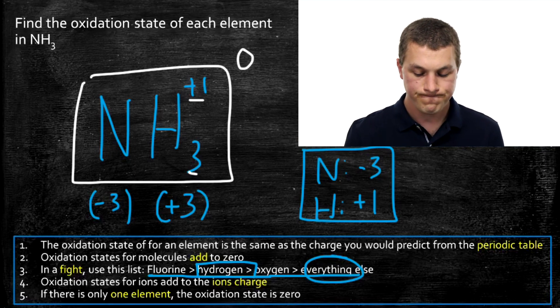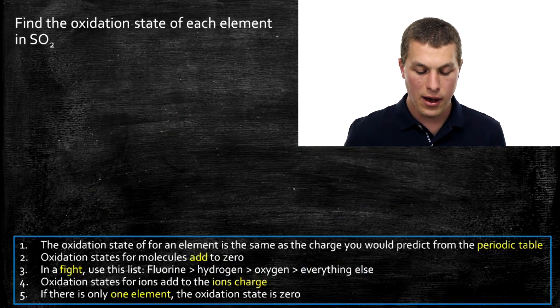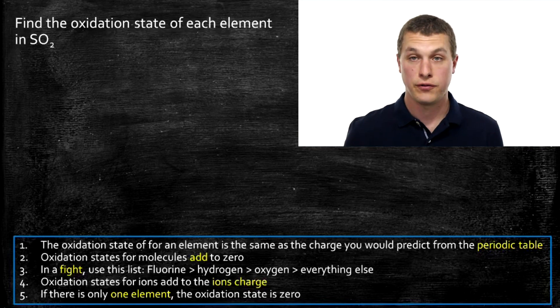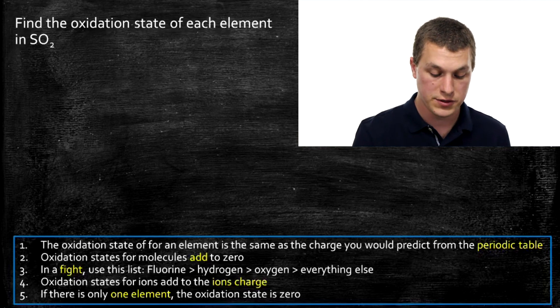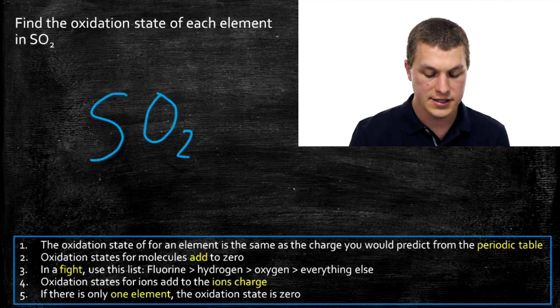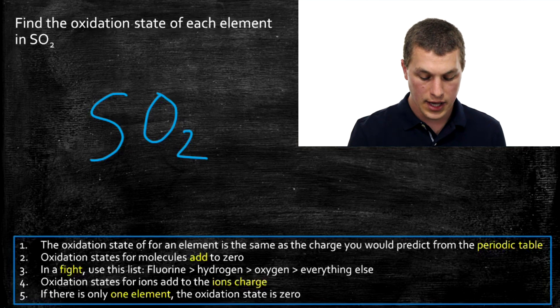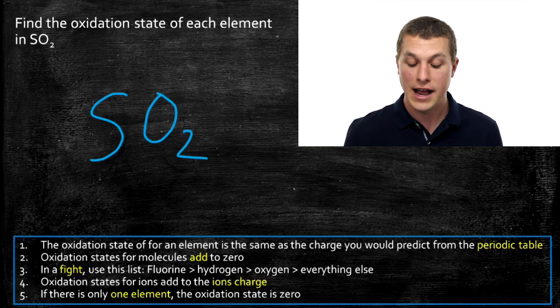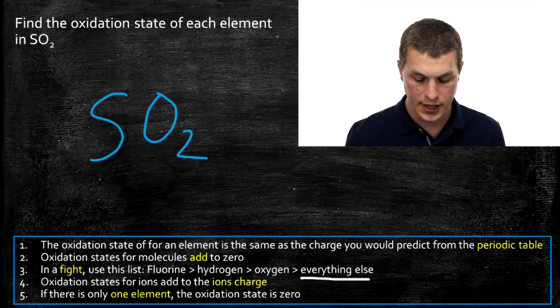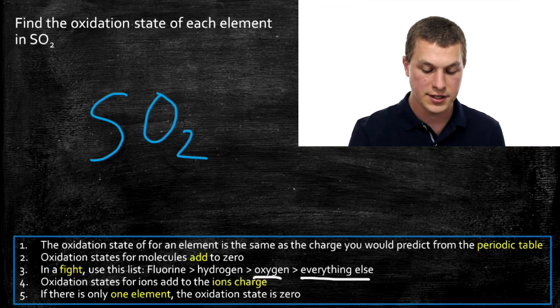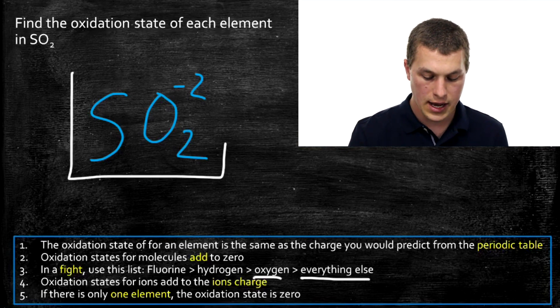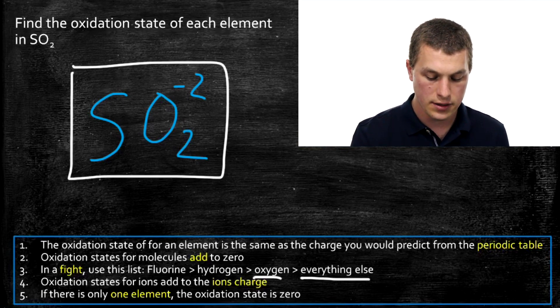Now we have the case where we're dealing with sulfur and oxygen. Both of these elements, you could predict the charge based on their position on the periodic table. So you have to go to our list that tells me which one to use. I use fluorine if I have it first, then hydrogen, then oxygen, then everything else. Sulfur is under everything else, and oxygen comes higher on the list. So I start out by assigning the oxidation state of oxygen. It's minus two, as always. I need the total oxidation state here to add up to zero.